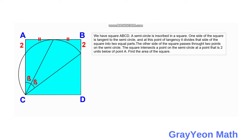Welcome to Grayon Math. If we are asked to solve this problem, we have square ABCD. A semicircle is inscribed in a square. One side of the square is tangent to the semicircle.